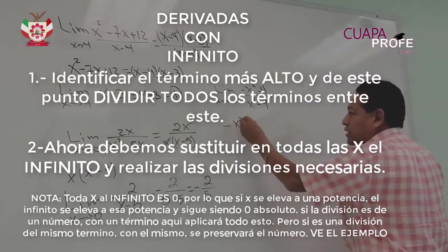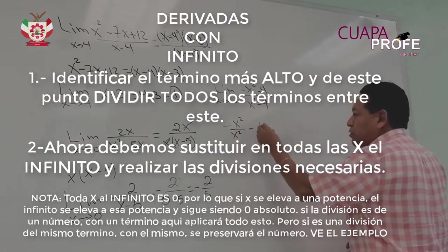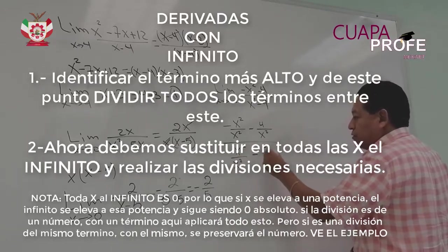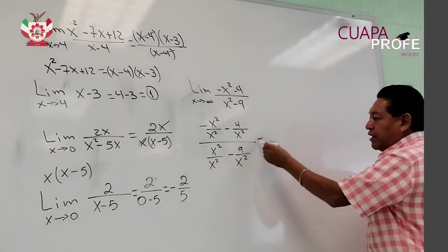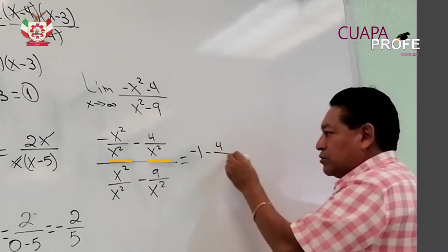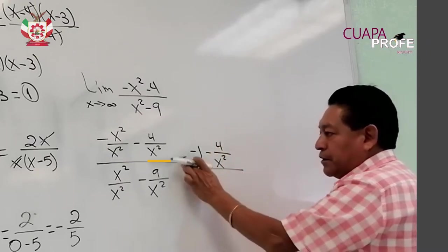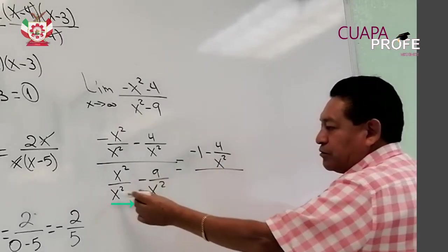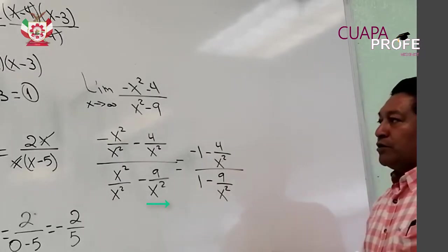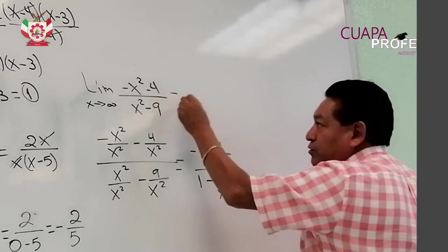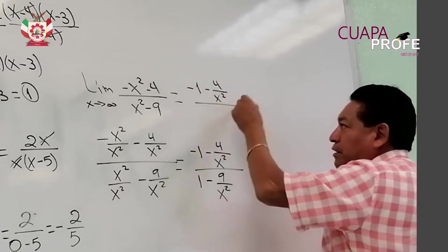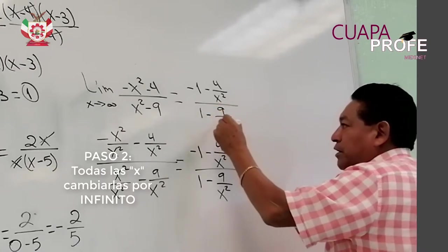Voy a tener menos x cuadrada sobre x cuadrada, menos 4 sobre x cuadrada, entre x cuadrada sobre x cuadrada, y menos 9 sobre x cuadrada. De tal forma que, al dividir x cuadrada entre x cuadrada, me da menos 1, y menos 4 sobre x cuadrada. Entre x cuadrada entre x cuadrada me queda 1, menos 9 sobre x cuadrada. Entonces, nuestra función se transforma, y ahora tenemos que esto es igual a menos 1 en el numerador, menos 4 sobre x cuadrada, entre 1 menos 9 sobre x cuadrada.